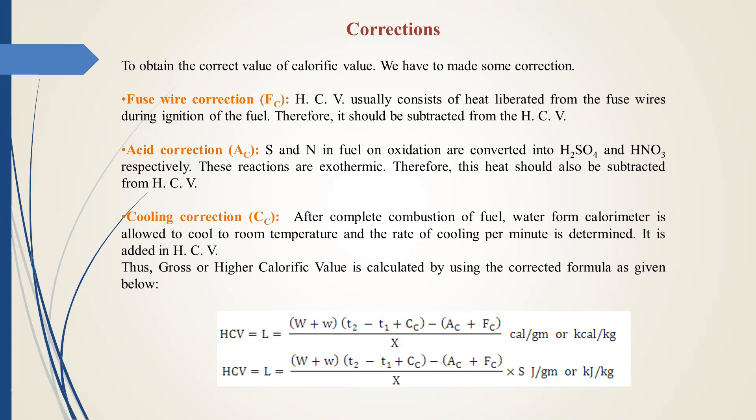High calorific value is equal to capital W plus small w times T2 minus T1 plus cooling correction minus acid correction plus fuse wire correction, whole divided by X, in calories per gram or kilocalories per kilogram.